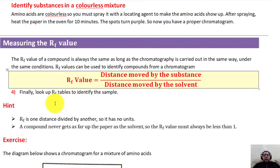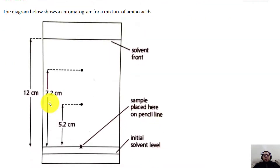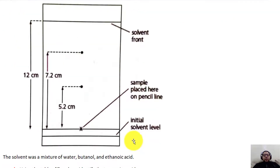Next we have the Rf value. The Rf value is a value you can calculate from the chromatogram. You get the baseline — your starting point — and measure the distance the substance has traveled. For example, if the red color has traveled 7.2 centimeters, you measure that with your ruler and note it down.